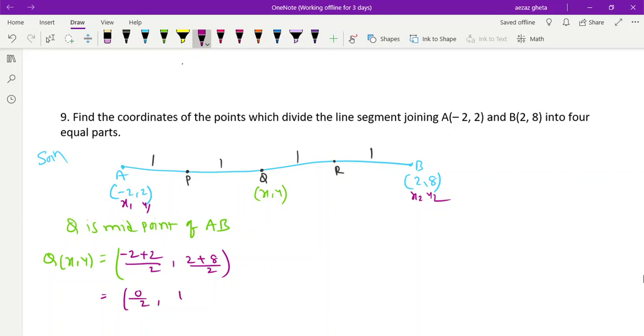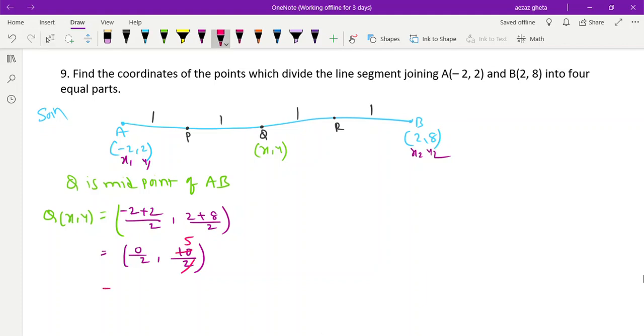0/2, 10/2. We'll get the answer: 0/2 is 0, comma 5. So we got Q as (0, 5).